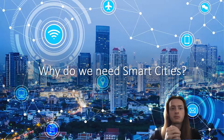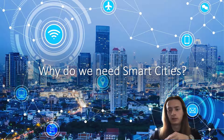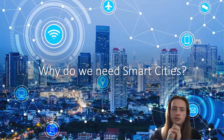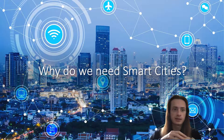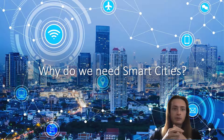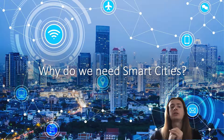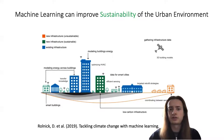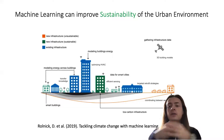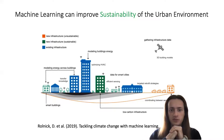Recently, machine learning has become very popular in relation to smart cities. It has shown good results in many real-life problems that we experience in cities. Here we will focus on how we can actually use machine learning to improve our cities by showing how we can use it to address a particular problem — just to get a general impression of how machine learning can be used.